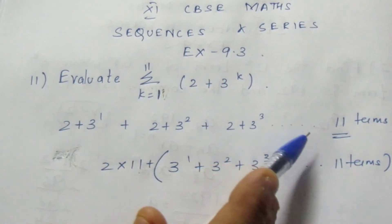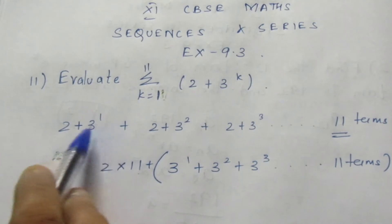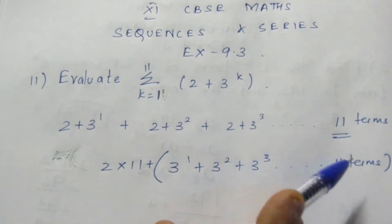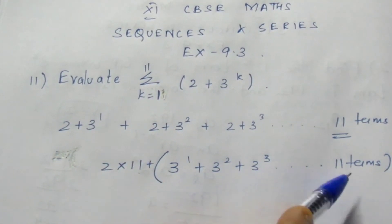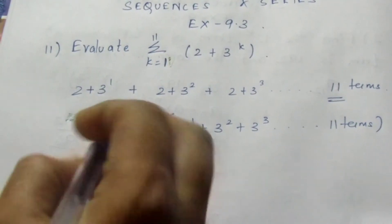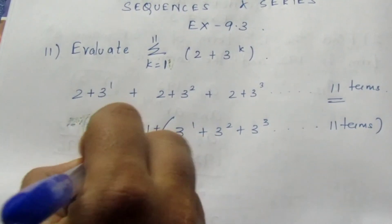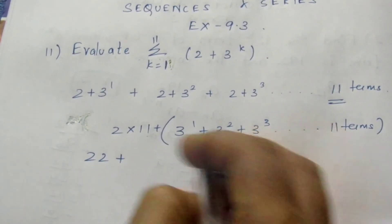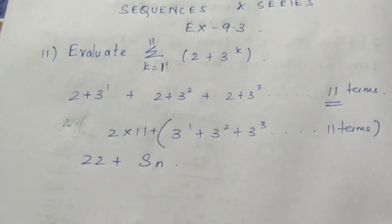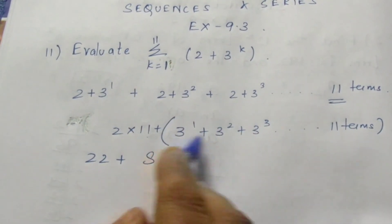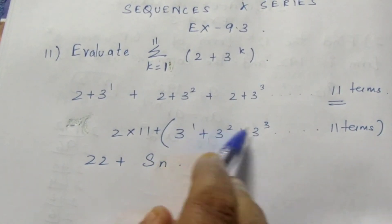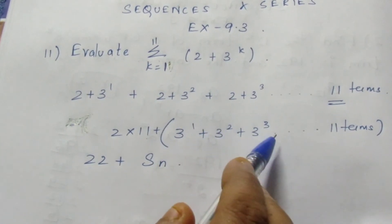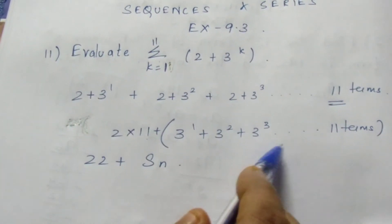I am taking this plus separately. I am writing 3 power 1, 3 power 2, 3 power 3 till 11 terms separately. This becomes 22 plus the series of powers. I am going to write this in GP because it is in GP — if powers are in natural numbers, they will be in GP.